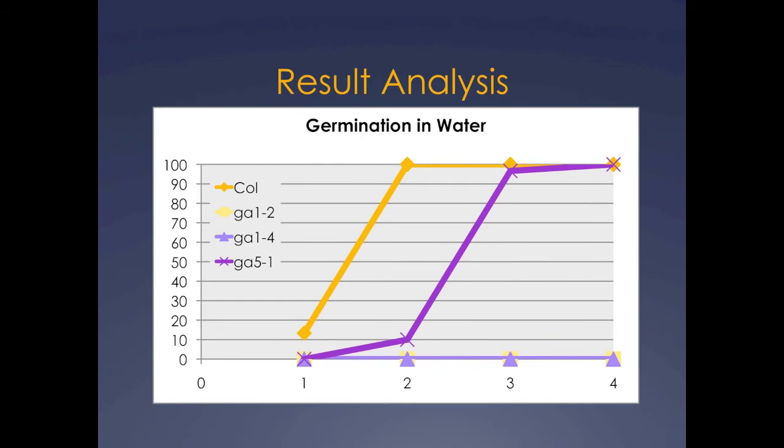Make sure to record your data each day in the provided data collection sheets. When you're done, graph your results in the provided Excel sheet and take note of the curves, looking not only at the maximum germination percentage, but also at the rate at which each genotype germinated.